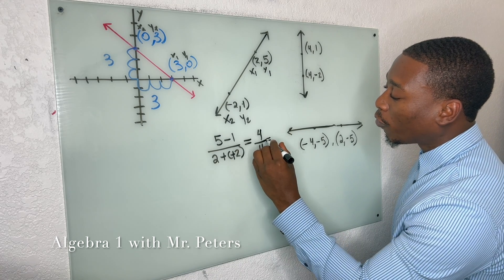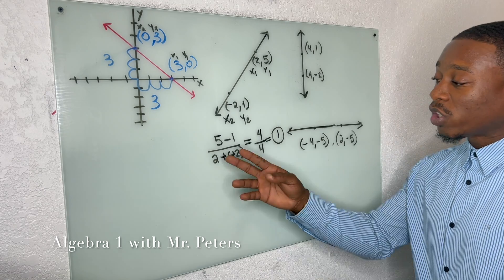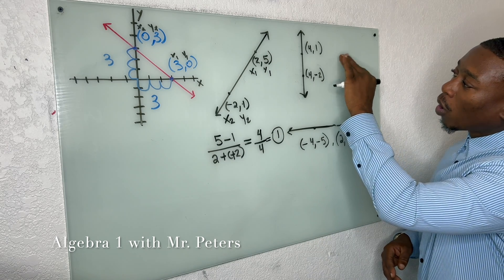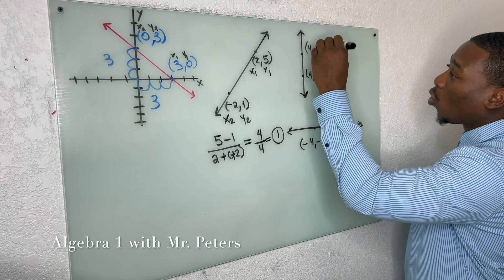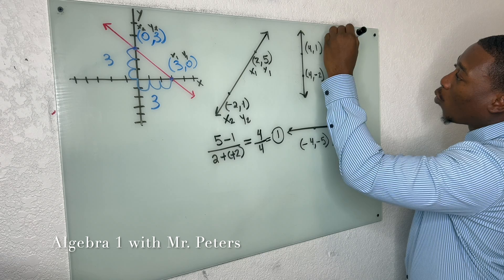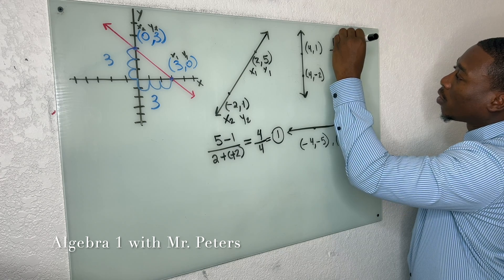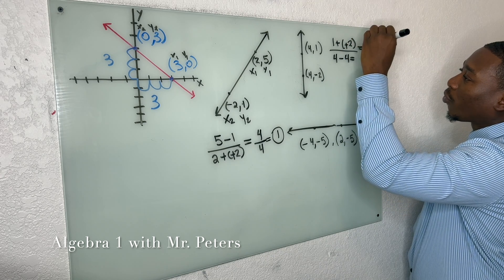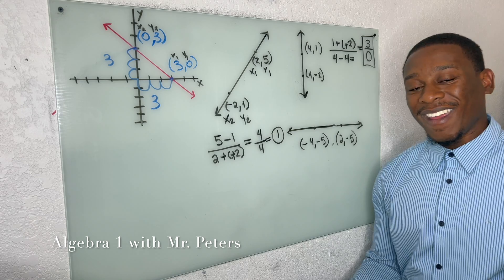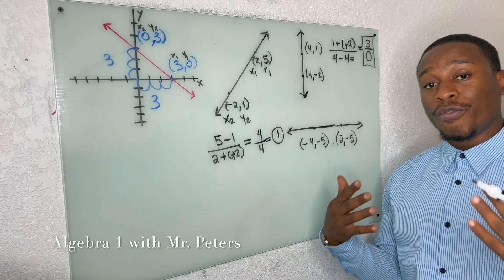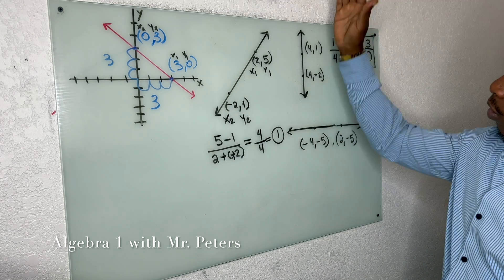Once we simplify the positive slope example, we'll get 4 over 4, which is just 1. So this slope will always be positive no matter which order we solve it in. When we go to our undefined slope, this means the x-values are going to be the same. Once we set this up, we have 1 minus negative 2 divided by 4 minus 4, giving us 3 over 0. We can't divide a number by 0 and get an answer — it's undefined. This is why we say undefined for a vertical line.